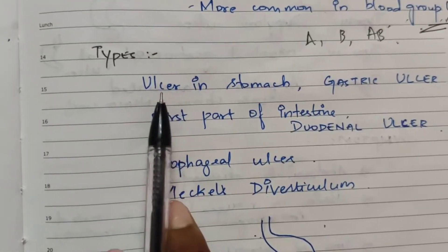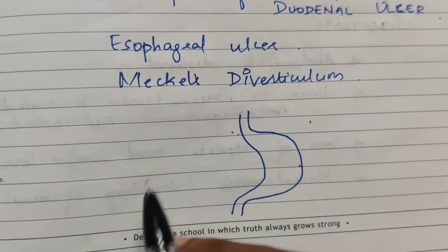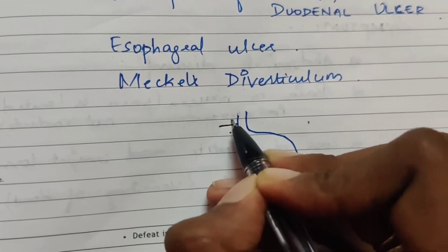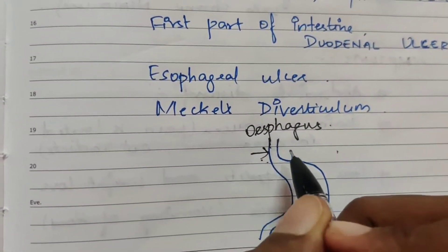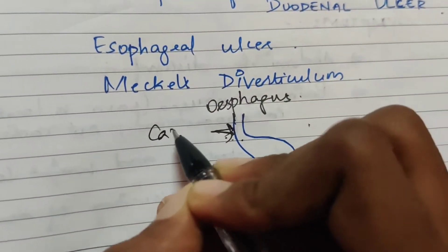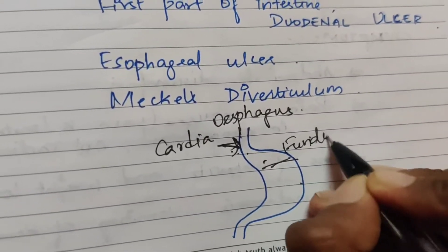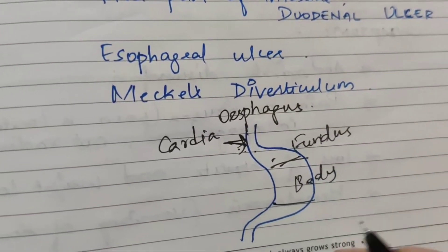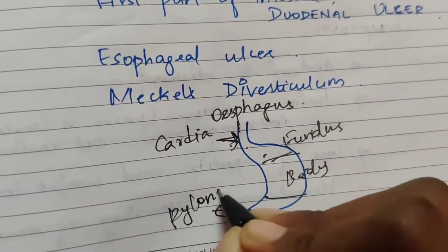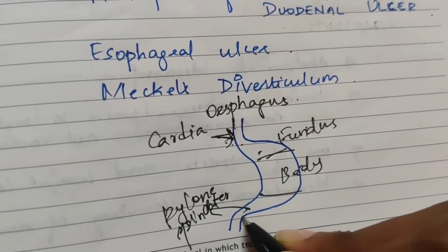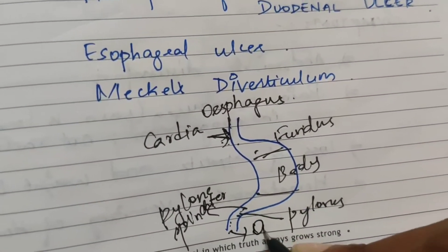The first type is an ulcer in the stomach, called a gastric ulcer. Looking at the parts of the stomach: the starting region connected to the esophagus is the cardiac region, then the fundus, the body, the pyloric sphincter, and last is the pylorus, which continues into the duodenum.